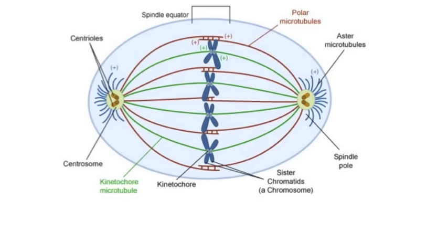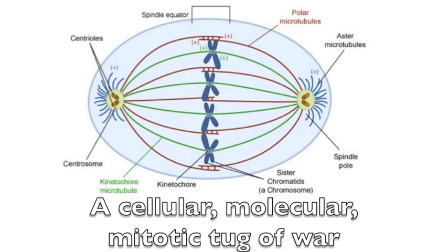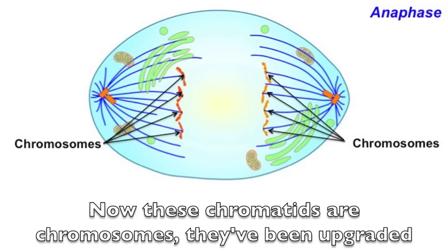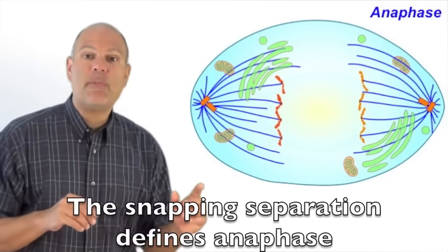The spindle fibers pull on the kinetochores. A cellular molecular mitotic tug of war. The centromere snaps, sisters get separated. Now these chromatids are chromosomes. They've been upgraded. The snap and separation defines anaphase.